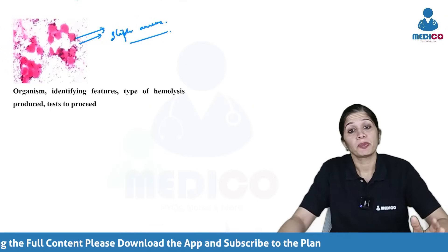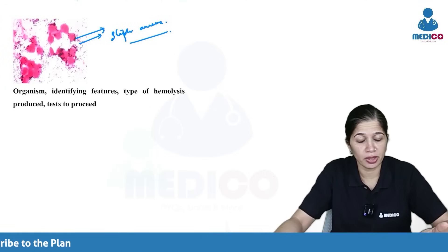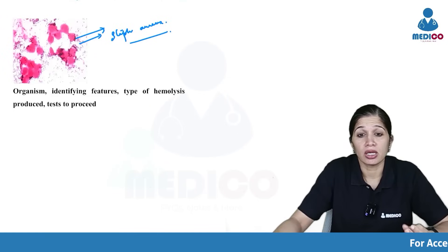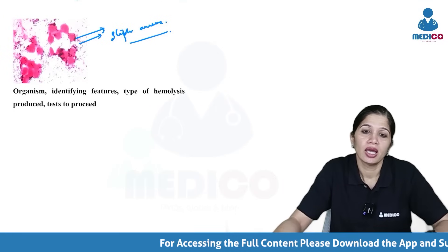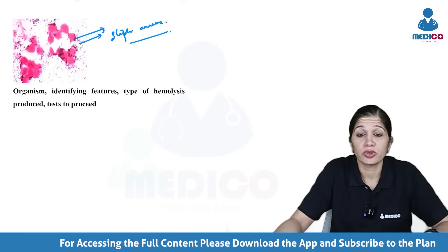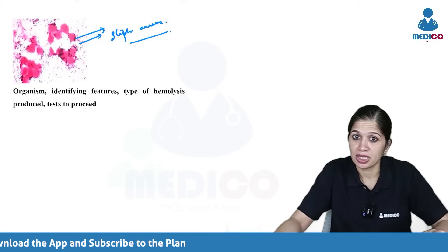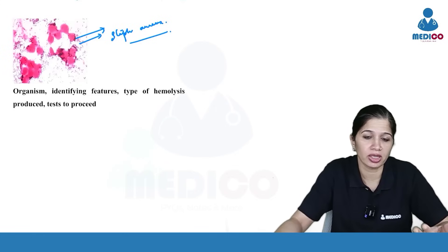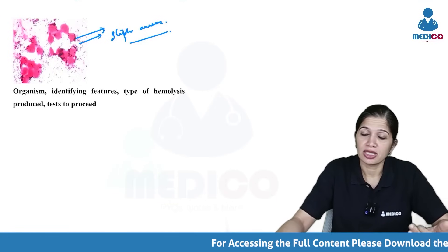The type of hemolysis produced by staph is beta hemolysis. The growth will typically be beta hemolytic and will produce golden yellow colored colonies, which is what is normally seen in Staph aureus. Whitish colored colonies are produced by coagulase-negative staph — they will appear the same on gram staining but will be non-hemolytic with white colored colonies, whereas golden yellow colonies are classic for Staph aureus.